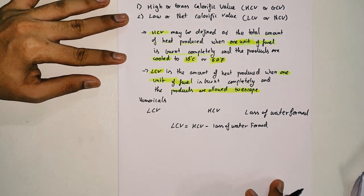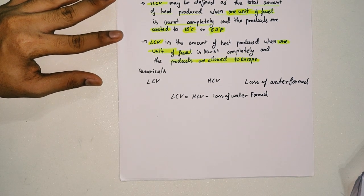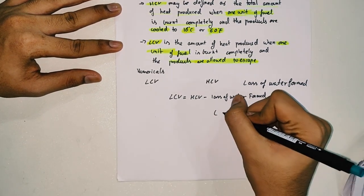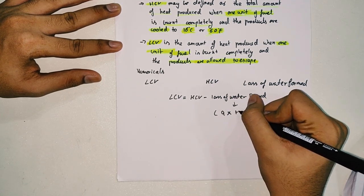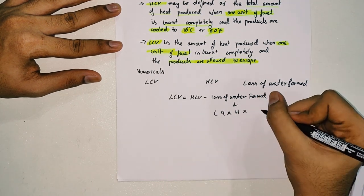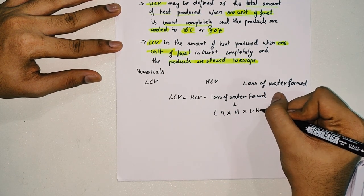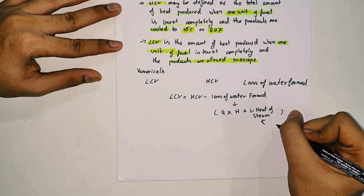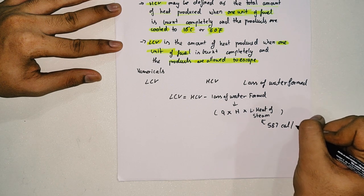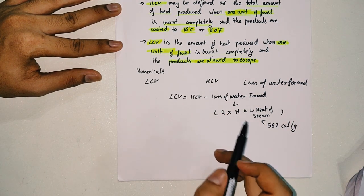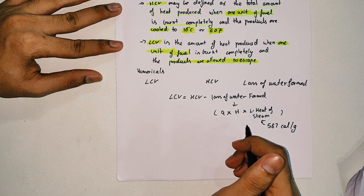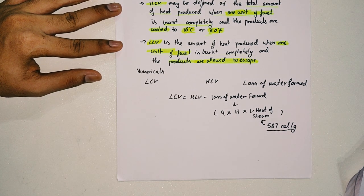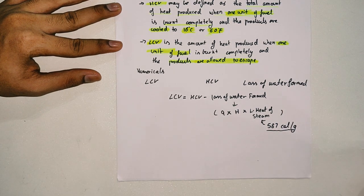The formula for loss of water formed is: 9 multiplied by the percentage of hydrogen multiplied by the latent heat of steam. The latent heat of steam is a constant which is always 587 calories per gram. So the formula is: 9 × (percentage of hydrogen) × 587 cal/g.